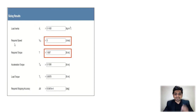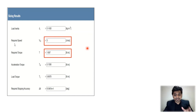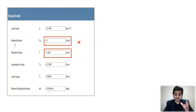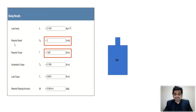These are our inputs from the previous calculations. We obtained these values from the Oriental Motor sizing tool — check out the previous session to see how these values were derived. These are the inputs we will now use for gearbox selection.